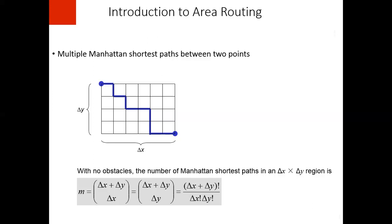Euclidean paths are usually shorter than the Manhattan paths. In this example we can have a total of 210 Manhattan shortest paths between these two points.